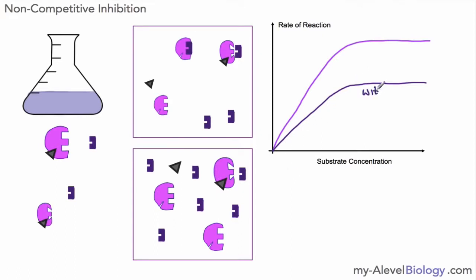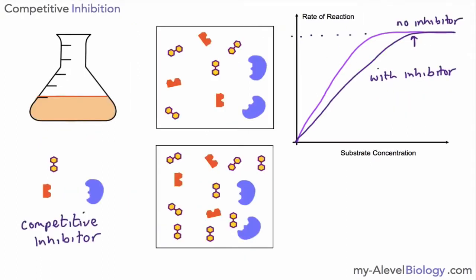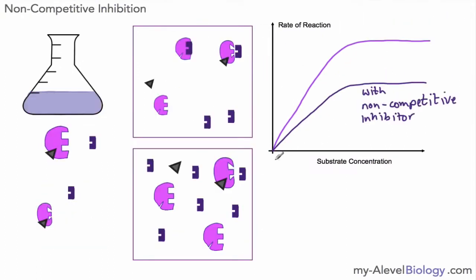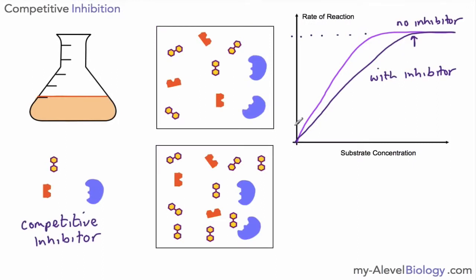It's important to understand these graphs and tell the difference between the two types of inhibition. The non-competitive inhibitor causes the curve to level out at a lower maximum, while the competitive inhibitor levels out at the same maximum but takes longer to get there. You should also be able to explain why, in terms of how these molecules interact with the enzyme.